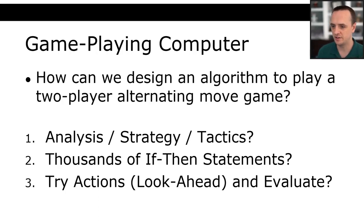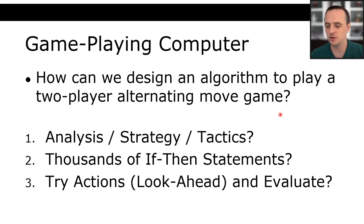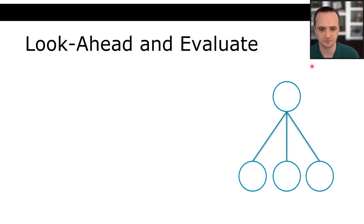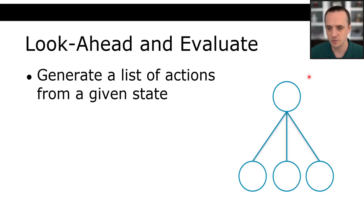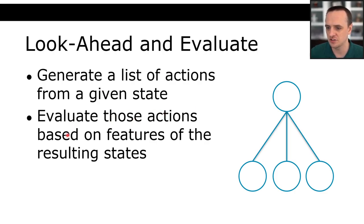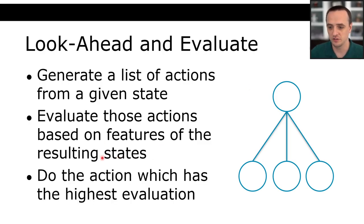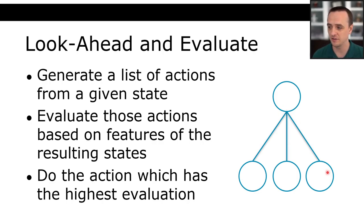Let's try a new idea: try some actions and evaluate those actions. From the current game state, generate a list of legal actions, evaluate those actions based on features of the resulting state, then do the action with the highest evaluation. For example: I'll try moving my queen here, my pawn here, my bishop here — then look at what would have happened and choose which was best.